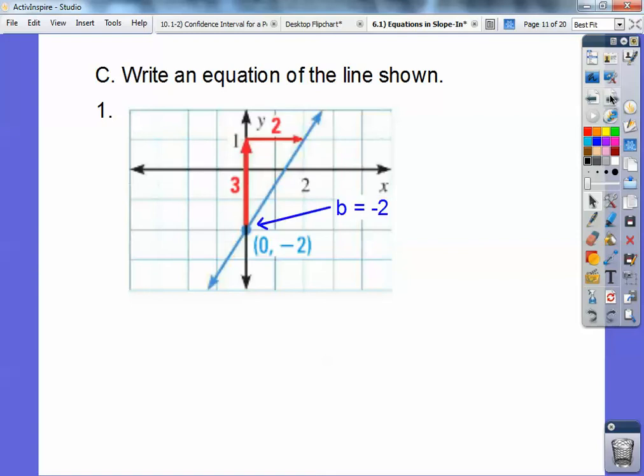So right there is your b. Your b is down there at negative two. And your slope then is rise over run. We had to go up three to the right two. Rise over run is three over two. So there we go. y equals three over two x minus two.